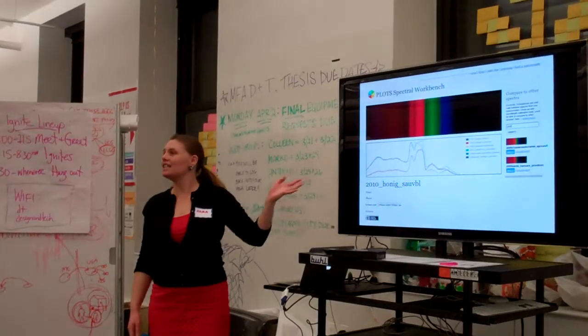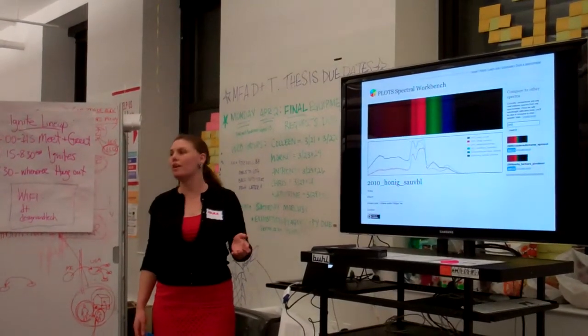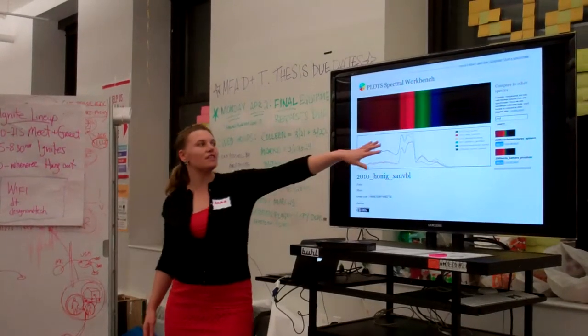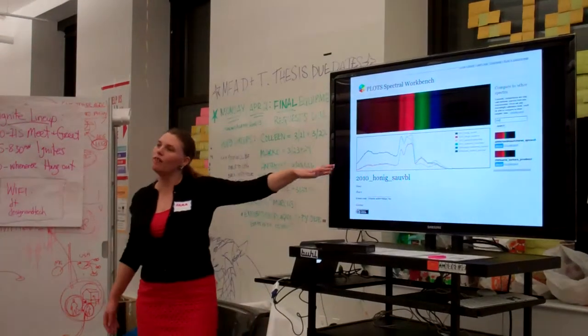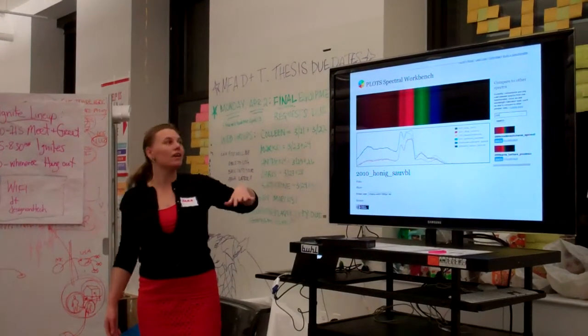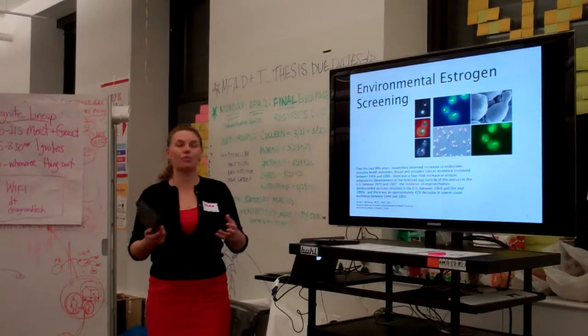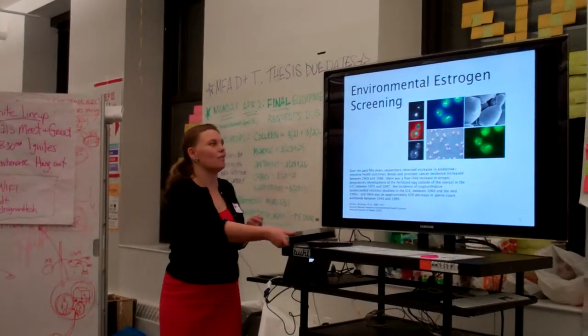Along with this kit, we have an online piece of software called the Spectral Workbench, where you can upload your spectra and compare and contrast them. This is a set of spectra somebody took of different kinds of wine. Basically, the idea is: can we use this kit, which costs about $3, to start identifying any kinds of chemicals?